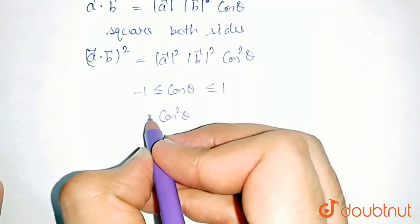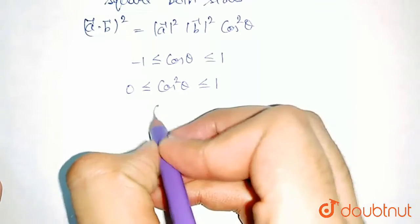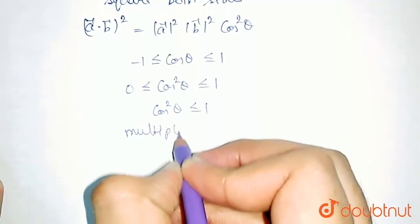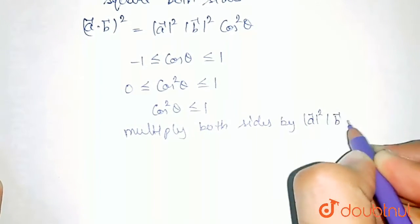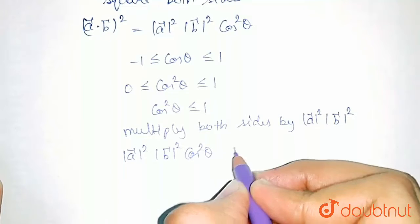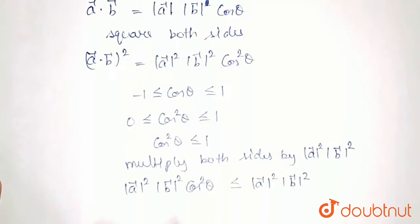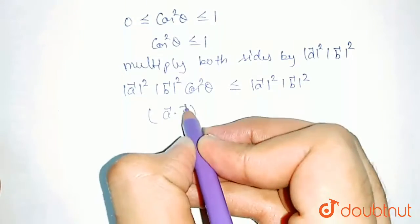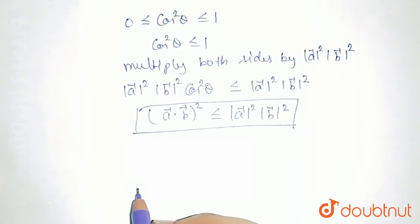So, if we square cos squared theta, it will always be greater than or equal to 0 but less than or equal to 1. So, cos squared theta is always less than or equal to 1. Now, if we multiply both sides by magnitude of A squared into magnitude of B squared, we will get magnitude of A squared into magnitude of B squared into cos squared theta is less than or equal to magnitude of A squared into magnitude of B squared. This is A dot B whole square, as already written. So, from here, we get A dot B whole square is always less than or equal to magnitude of A squared into magnitude of B squared. So, the first condition is proved.